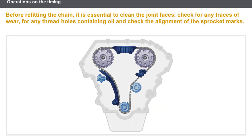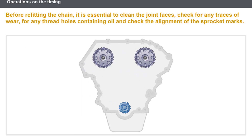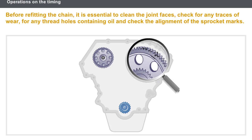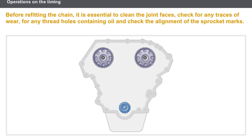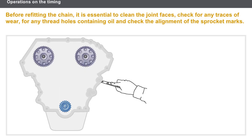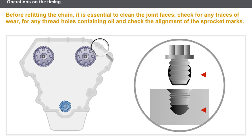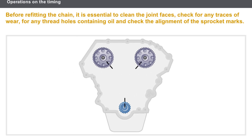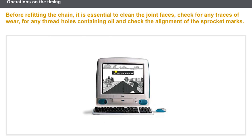Now let's look at the checks to be carried out before removing and refitting a timing chain. After having aligned the marks and locked the engine with a pin, the chain must firstly be released and then removed. Before refitting, it is essential to carry out the following operations: check for any traces of wear on the chain housings and sprockets, check that there are no splits or excessive wear in the chain, clean all the joint faces, check that any thread holes have no oil within them, and check that the sprockets are correctly aligned. You should always refer to the technical documentation for special refitting procedures for each engine type.